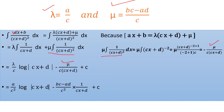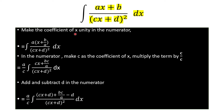Let's move to the second way. In this method, the first step is to make the coefficient of x unity in the numerator. The coefficient is a, so take a common from the numerator. You get a × (x + b/a) in the numerator, with the denominator remaining as (cx + d)² dx. So a moves outside the integral.